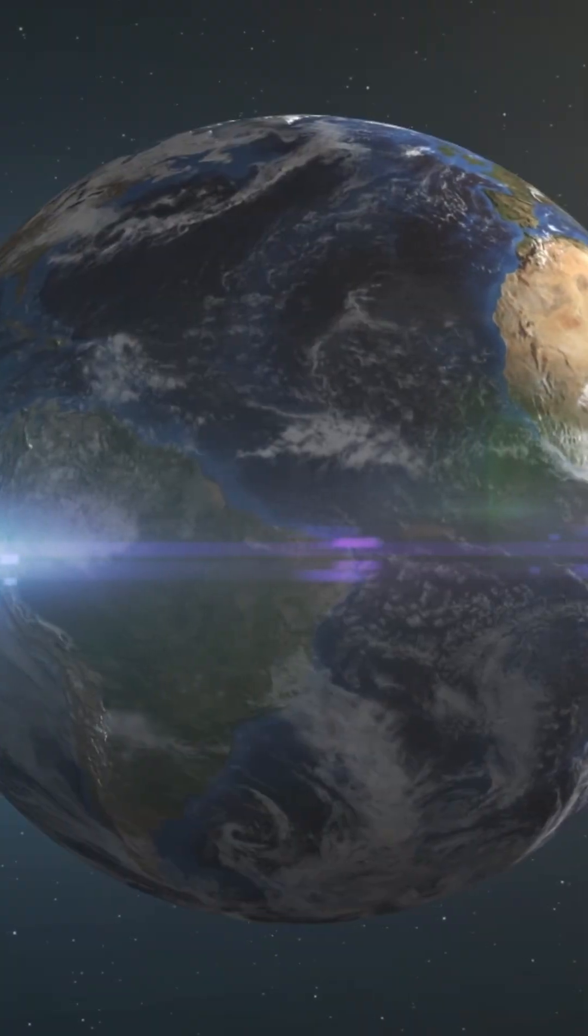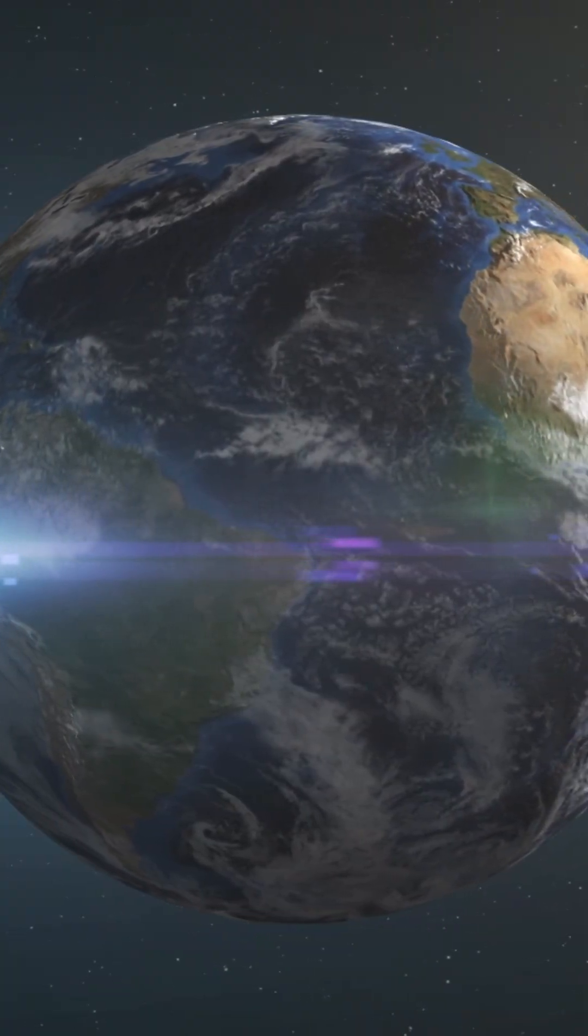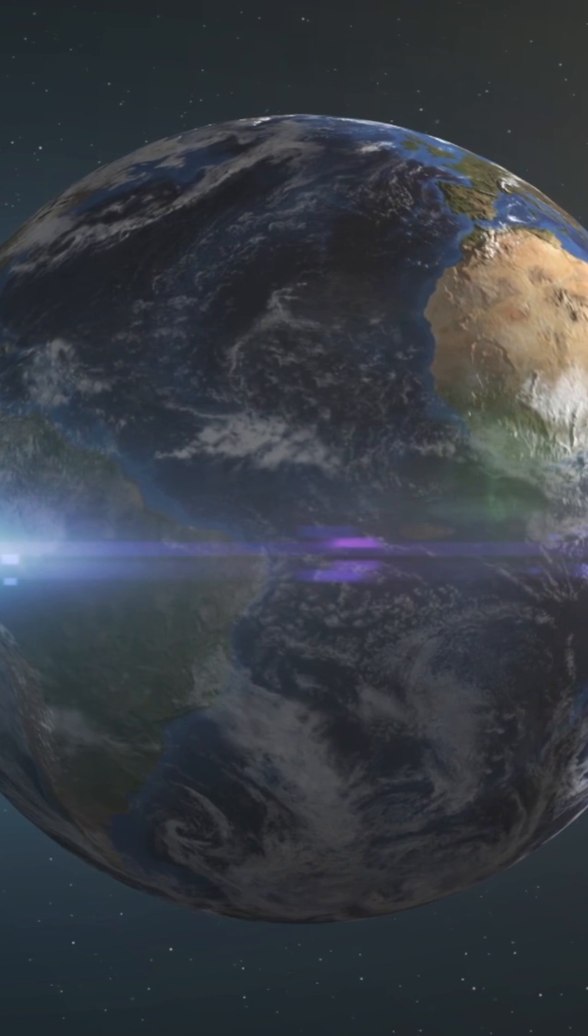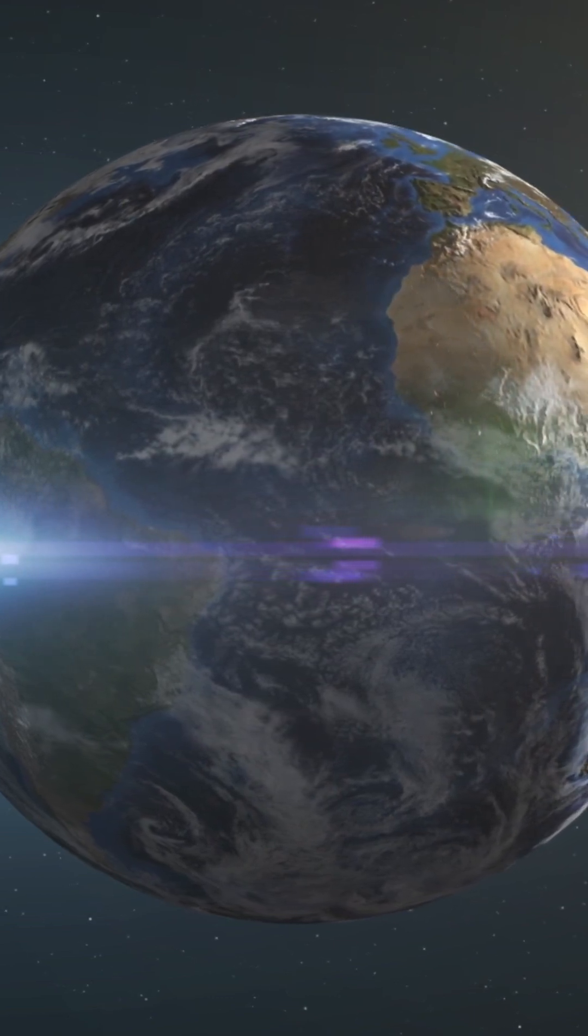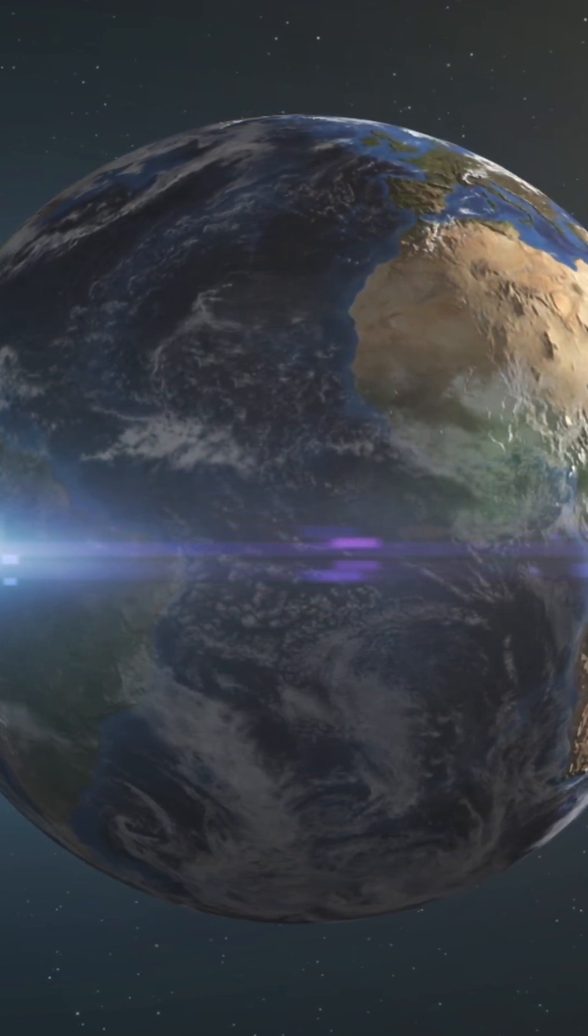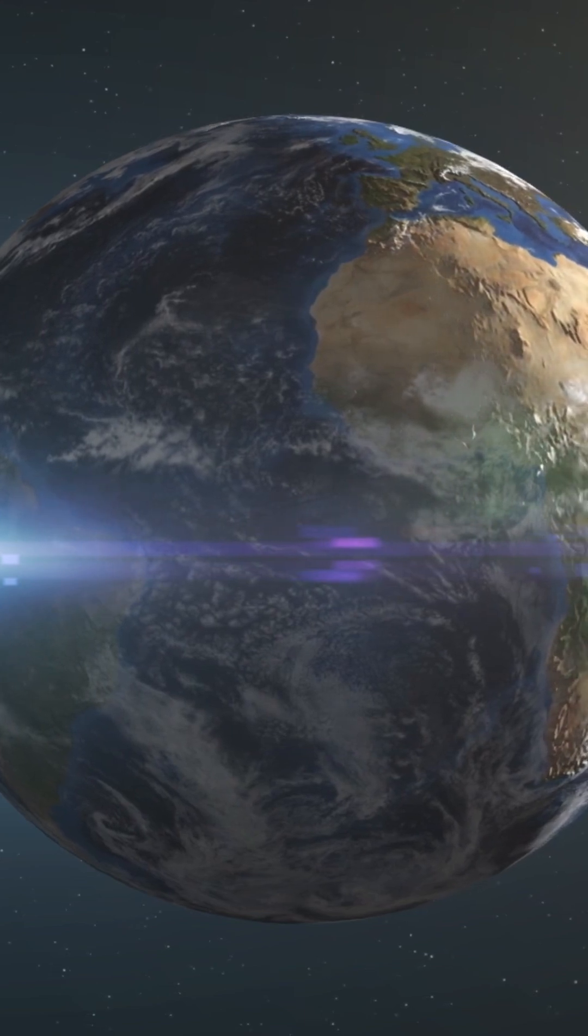From the equator, the rings would rise high into the sky, a breathtaking band of silver cutting across the horizon. But from the poles, they'd vanish into the darkness, hidden by the curve of the Earth.